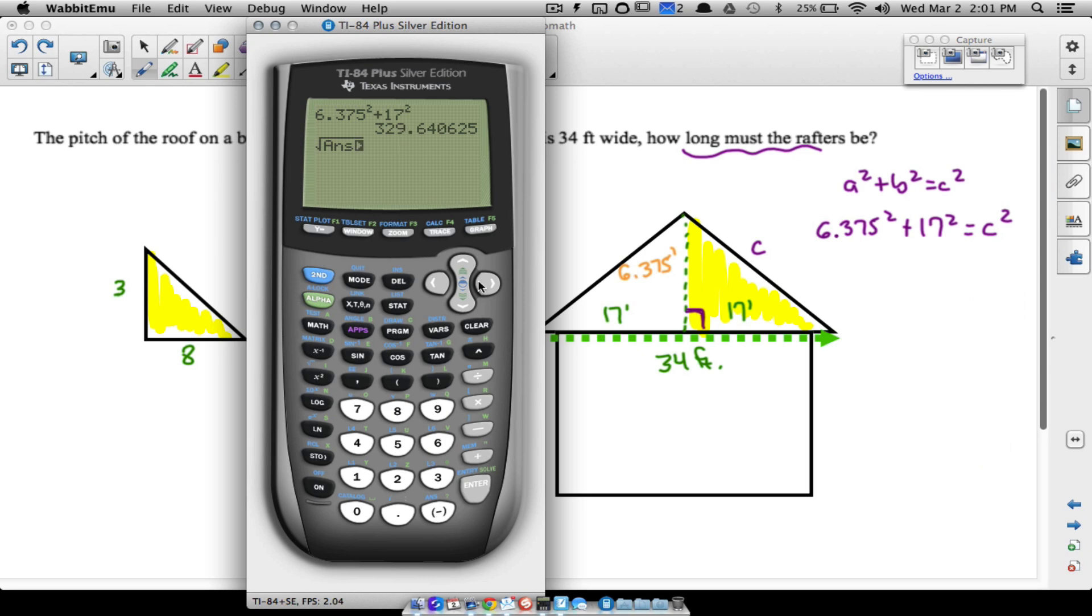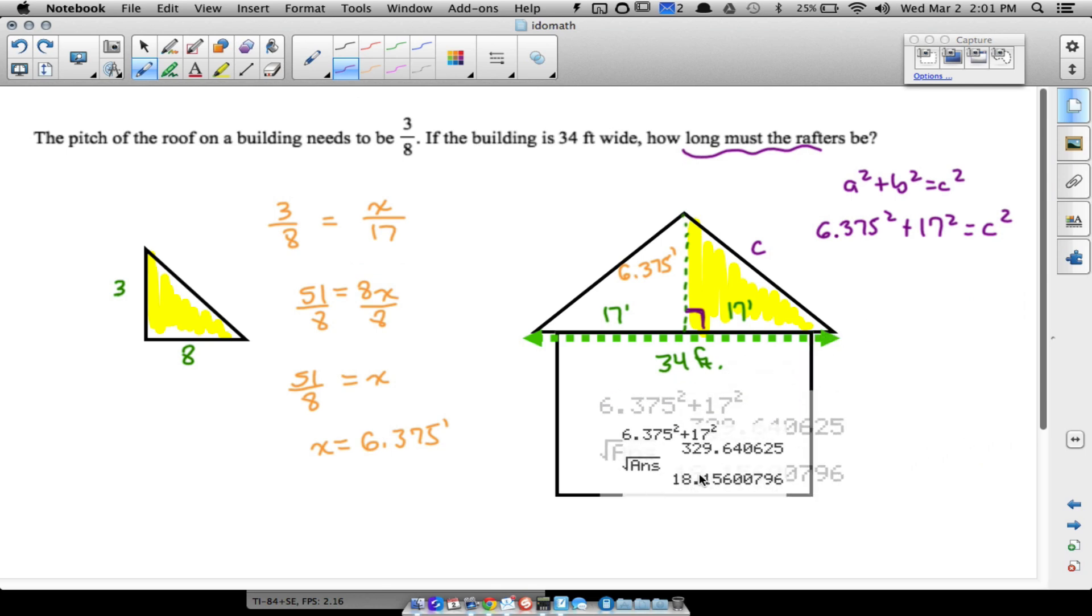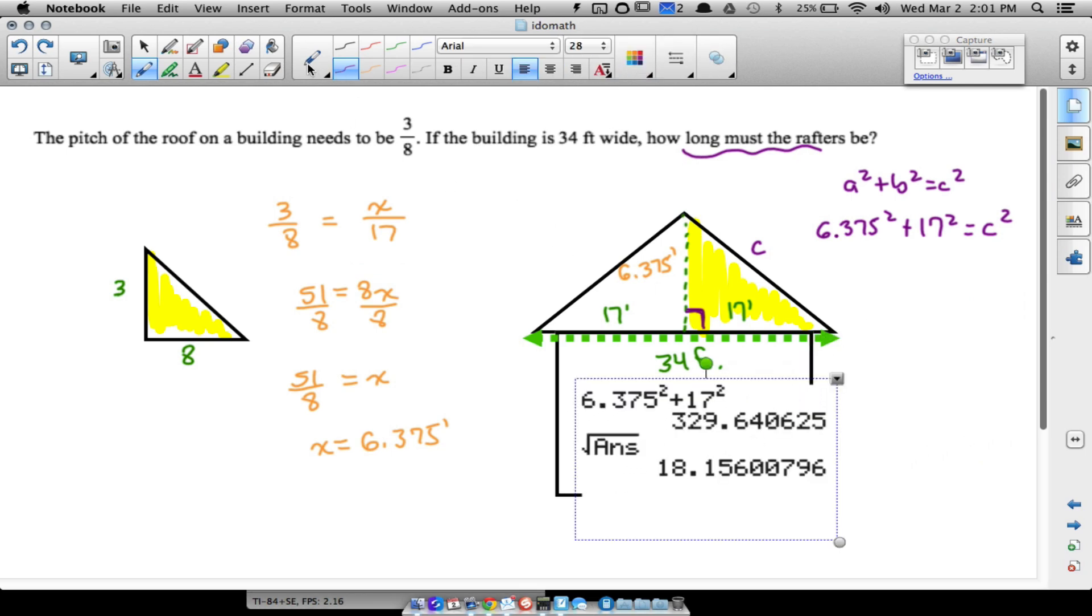So I'm going to do that by taking the square root of my answer, and therefore we get something. Now that we finally got this, we can say c is approximately 18.2, I'm just rounding to the nearest tenth, feet.